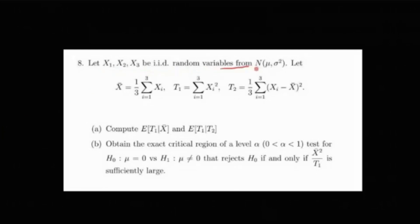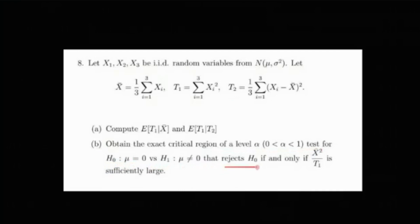The problem states: let x1, x2, x3 be IID random variables from Normal(μ, σ²). Let x̄ = (1/3)Σxi, t1 = Σxi², and t2 = (1/3)Σ(xi - x̄)². Compute E[t1 | x̄] and E[t1 | t2]. The second question asks to obtain the exact critical region of a level-α test for H0: μ=0 versus H1: μ≠0 that rejects H0 if and only if x̄²/t1 is sufficiently large.